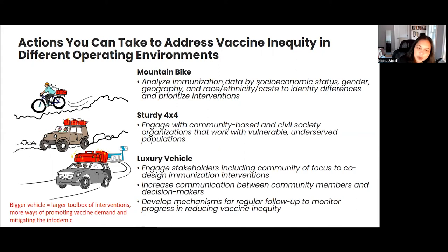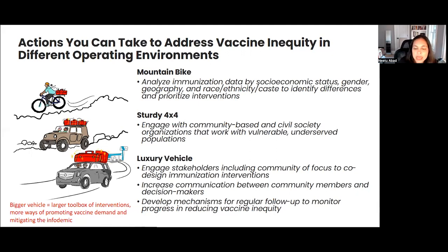Going even further, we can engage stakeholders including communities of focus to co-design immunization interventions, increase communication between community members and decision makers and policymakers, and develop mechanisms to follow up, monitor, evaluate, and feed back the progress we're making in reducing vaccine inequity. All of these things together are doable in various ways, and we should strive to include them in our work.